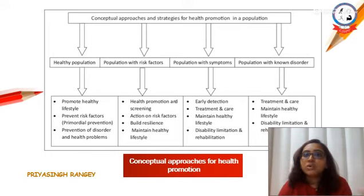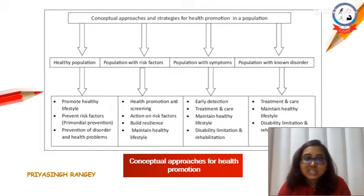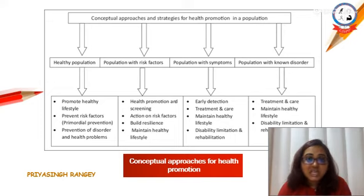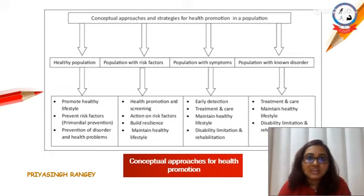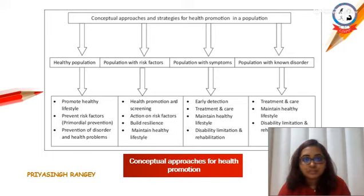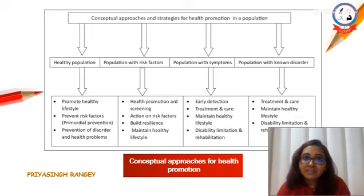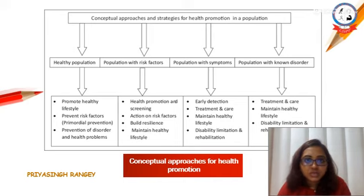For the healthy population, we need to promote a healthy lifestyle. The individual is healthy but it is not certain they may not develop pathology in future, so it is important to explain the importance of maintaining a good lifestyle. We also need to prevent risk factors through primordial prevention. In a population that already has risk factors, health promotion needs to be done — we need to explain the importance of maintaining health, screen individuals who might have the disease, take action on those risk factors by reducing or eliminating them, and ask individuals to maintain a healthy lifestyle.